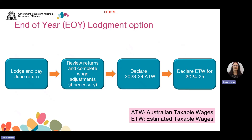If you are a designated group employer or an interstate non-group lodging monthly or quarterly, you need to declare the estimated taxable wages for the coming 2024-2025 financial year. The designated group employer is responsible for lodging the estimated taxable wages for the group. However, members will have read-only access to Revenue Online to view the group's estimated taxable wages. Please note that for groups, the estimated deductible amount will apply only to the designated group employer, and the estimated tax rate will apply to all group members. Employers lodging annually do not need to lodge estimated taxable wages. Please make sure that you check your assessment advice after the reconciliation is completed by Revenue WA and pay by the due date.